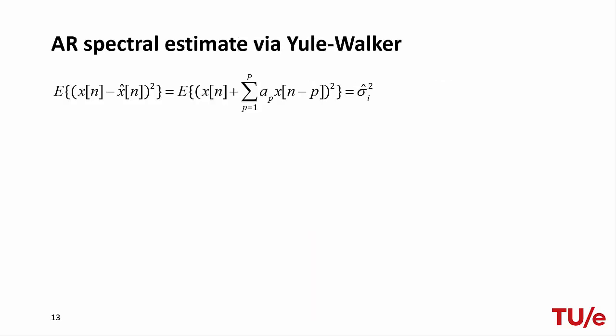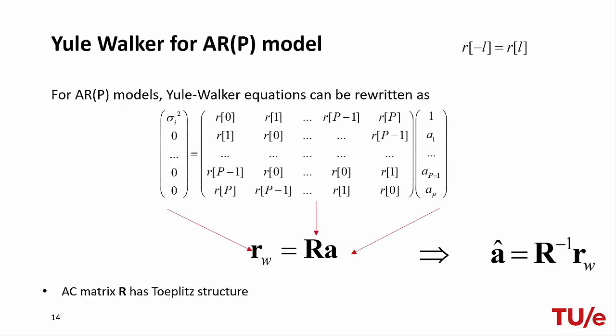But how can we estimate the model parameters? The first way is by using Yule-Walker equations. We look for the set of parameters that minimize the error between the observed signal and our signal model in the least-squares sense, meaning the expected value of the squared difference between the observed signal and our model is white noise. The derivation of the Yule-Walker equations can be found on the course website. In the matrix equation, we assume real-valued signals for which the correlation is symmetric, so R(−L) = R(L). To apply this, we plug in estimates of the autocorrelation function from observed data, and since we need P+1 parameters, we need P+1 lags.